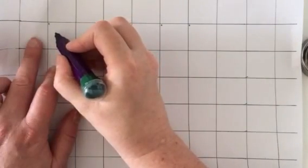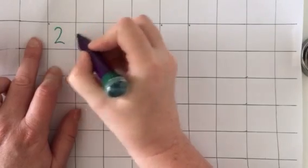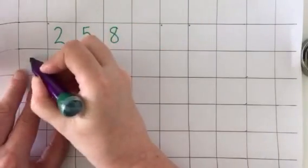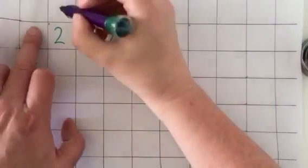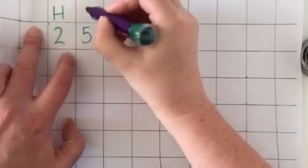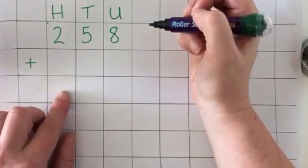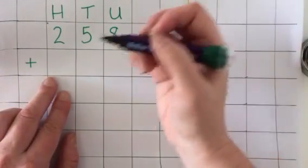The first example I'm going to do is 258 add 75. I'm going to write my hundreds, tens, and units at the top because it is really important that I position the 75 correctly. I'm adding a three-digit number to a two-digit number.